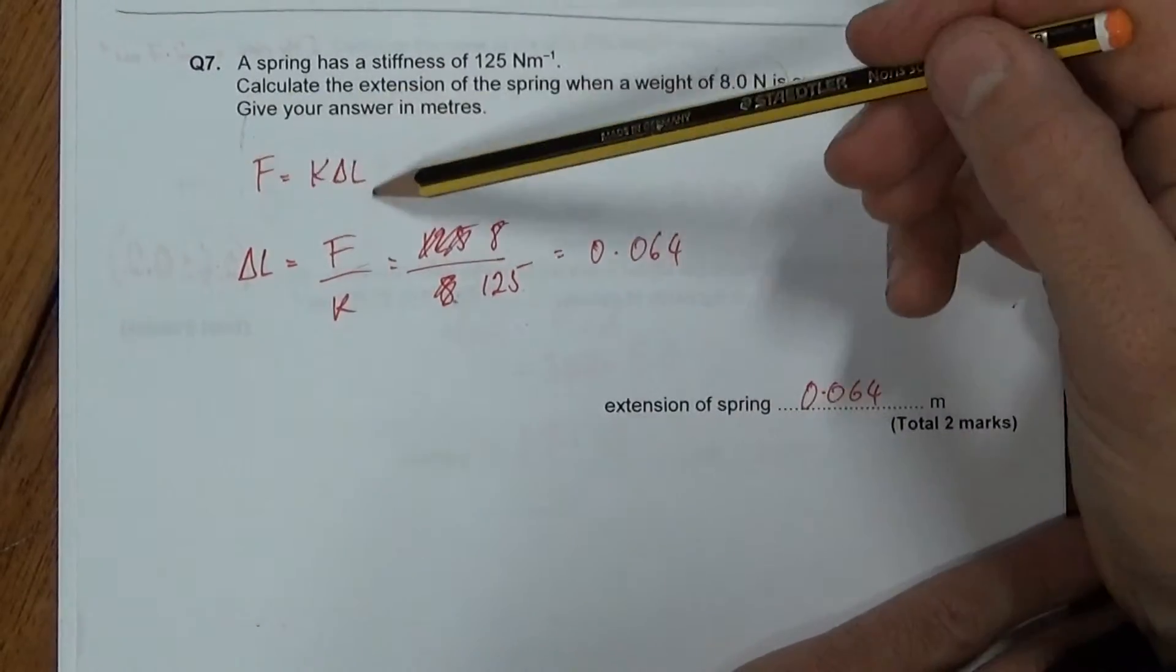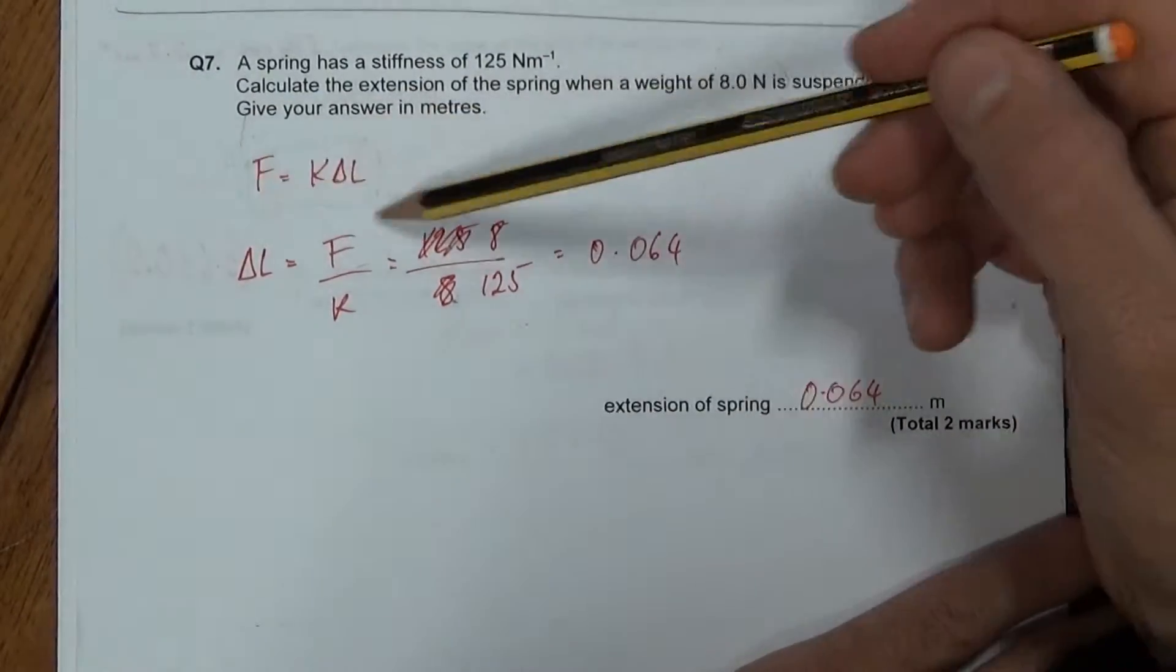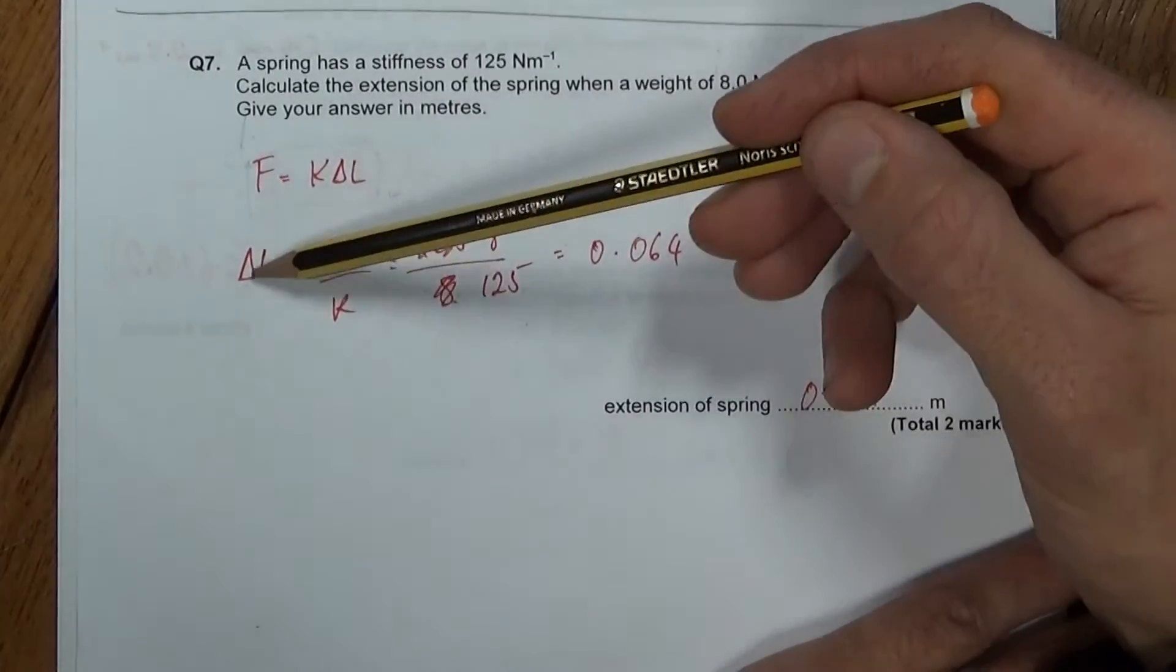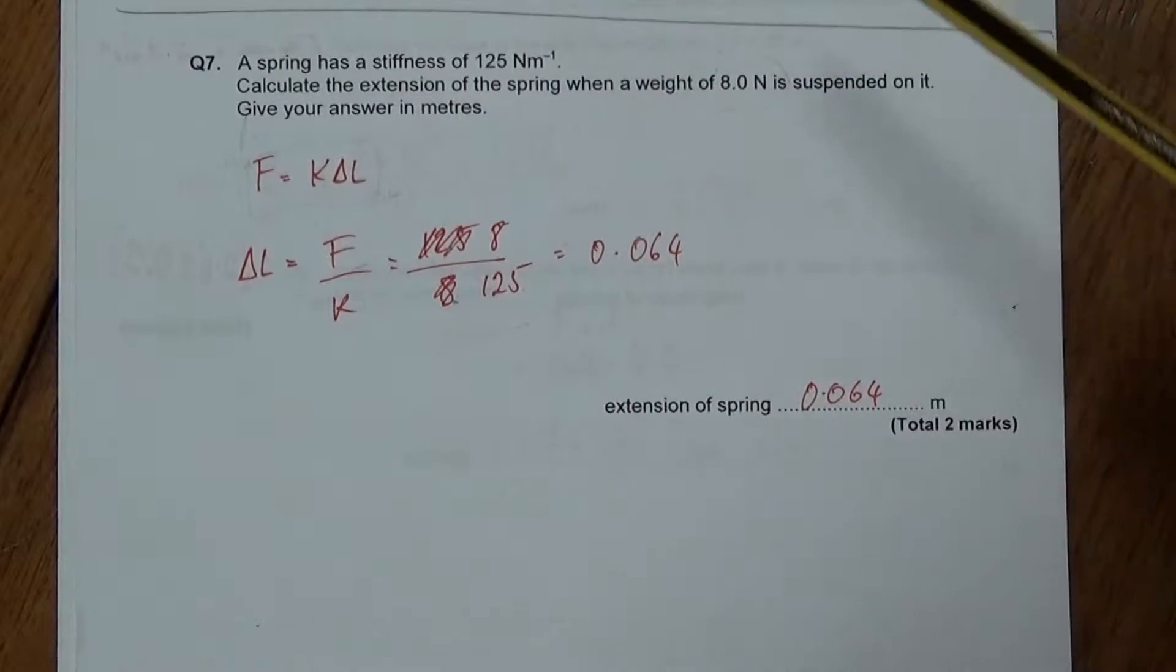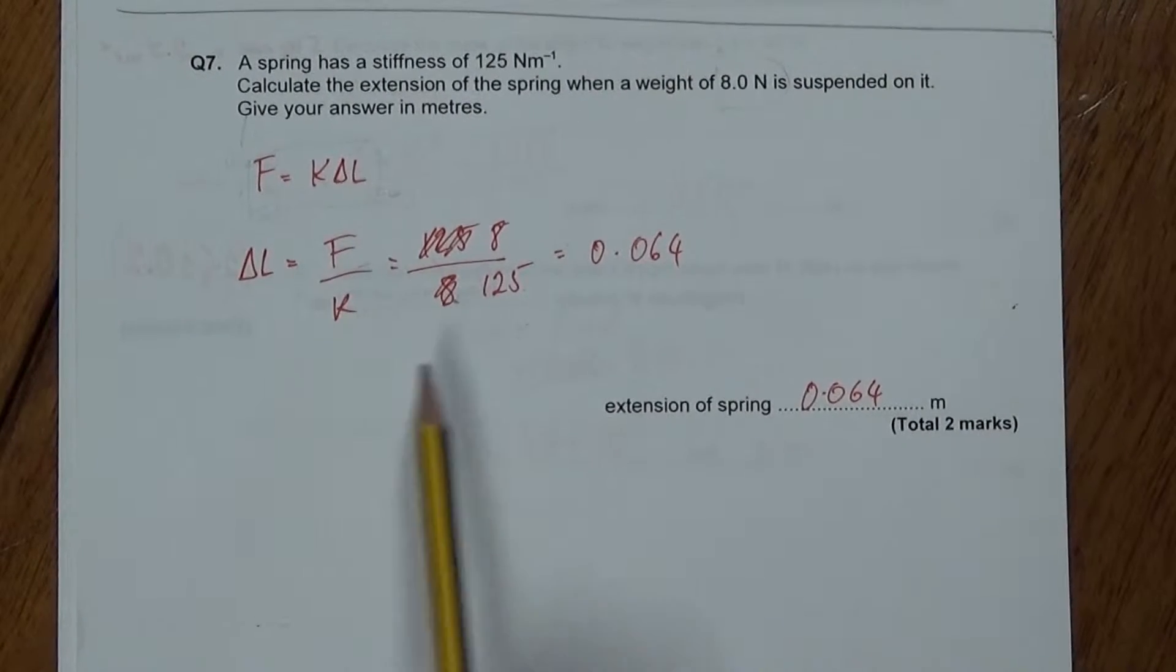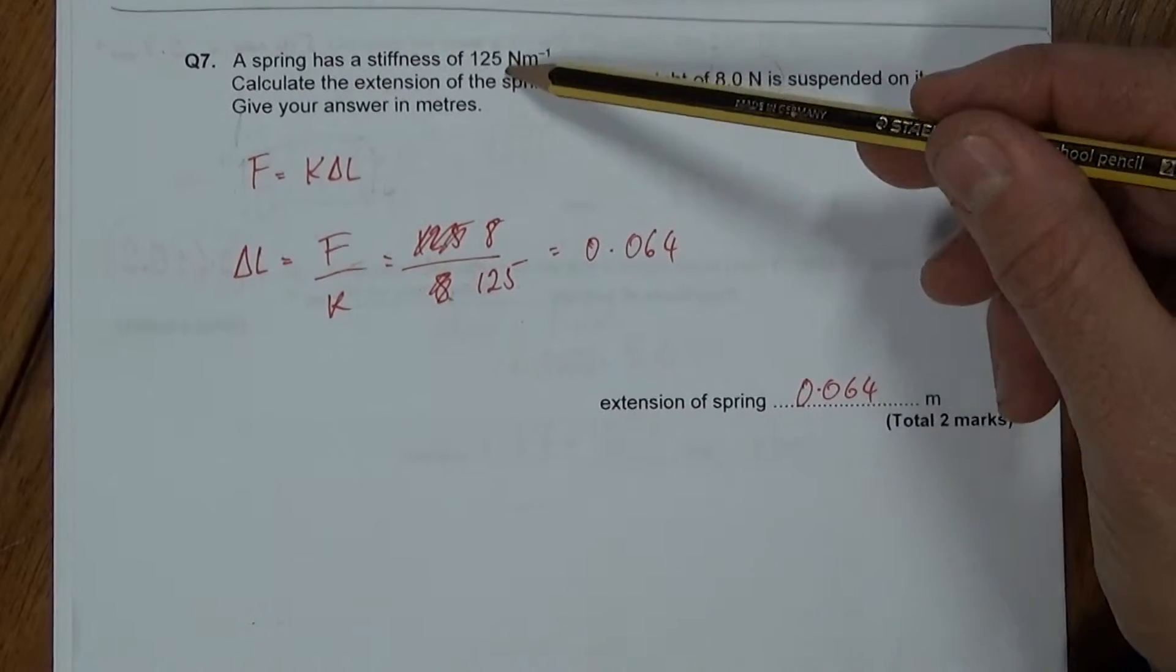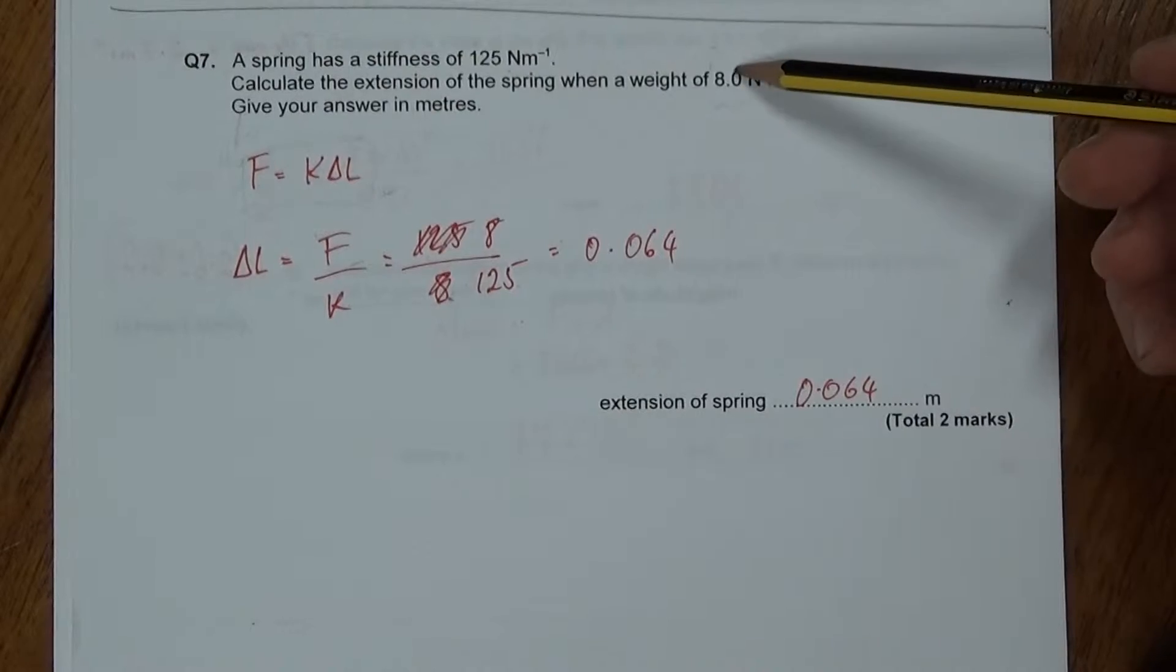So we know that the force is equal to the spring constant times the extension. Rearranging that, delta L, the extension is force divided by the spring constant. Okay, so we just put delta L equals F over k. And then the hard bit is to recognize which bit of this is a force and which bit is a spring constant.